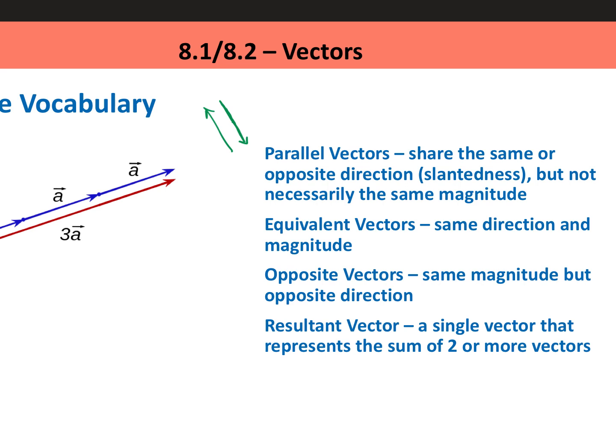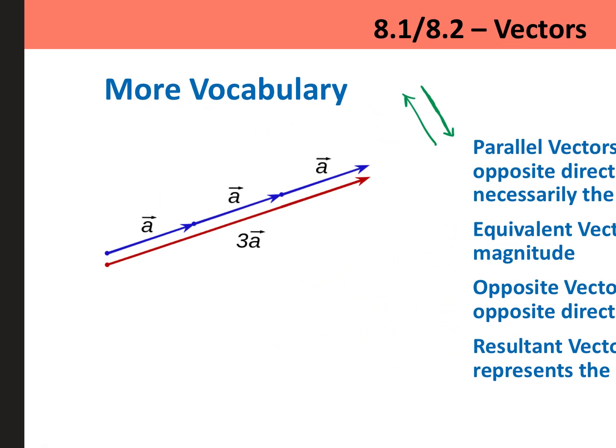And then lastly, the resultant vector is one single vector that represents the sum of two or more vectors. In this picture that I included in the slide, I have vector a in the blue, and I have added three vector a's together. I've done this visually. When we visually add or graphically add two vectors or three vectors together, we attach them to one another tip to tail.